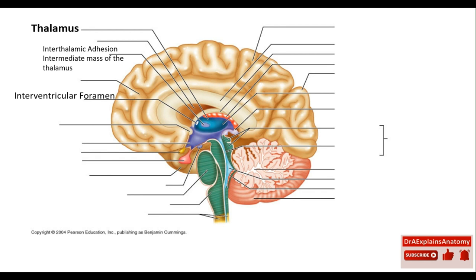This right here is the interventricular foramen. This is the anterior commissure. Don't confuse the fornix right here with the anterior commissure anteriorly.